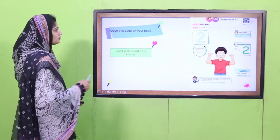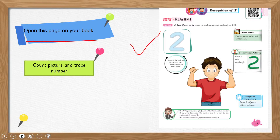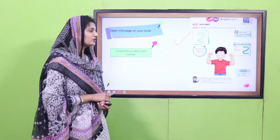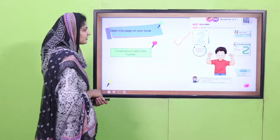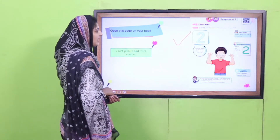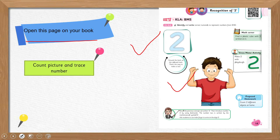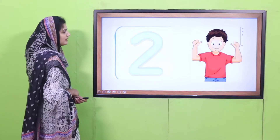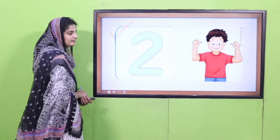I want you to open this page in your book. Pause your video here, quickly open this page, and come back. Playgroup, I hope you have come back with this page open. Let's take a look at the page — we have a boy showing his body parts, a few activities in the right corner, and a homework section as well.